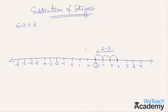Let's move to the second example which is 8-(-1). This looks quite confusing because we have two minuses in the same equation. In this case, first you need to mark the number 8 and then instead of moving towards the left, you actually need to move towards the right because we are subtracting a negative integer. So 8-(-1) is actually 8+1 — you move one step towards the right, making the answer 9.